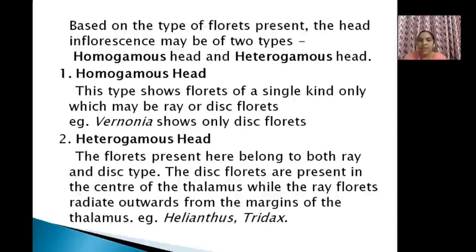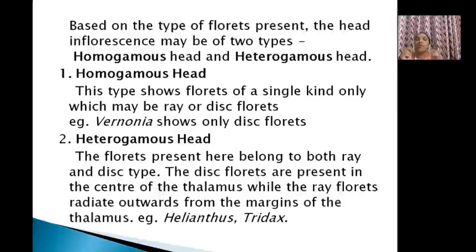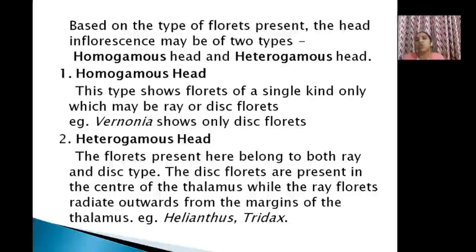There are two types of head: homogamous head — having only a single kind of floret (only ray floret or only disc floret), example Vernonia — and heterogamous head — having both ray florets and disc florets, examples being Tridax, Helianthus (sunflower). You need to study how to differentiate both types with examples.